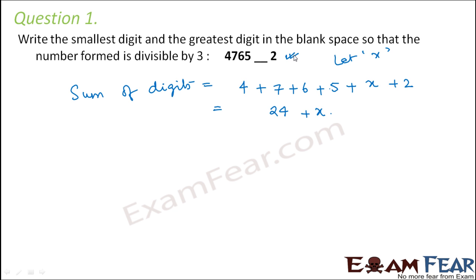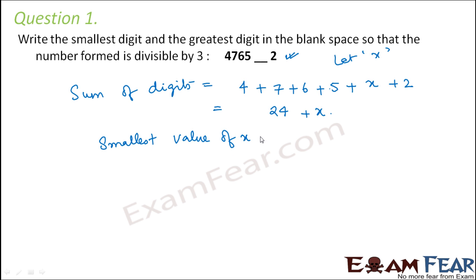That is our divisibility rule of 3. Now what is the smallest value that x can take such that 24 plus x is divisible by 3? Is 24 divisible by 3? Yes, it is — 24 is divisible by 3. So the smallest value that x can take would be 0, because when x is equal to 0, the sum is 24, which is divisible by 3.